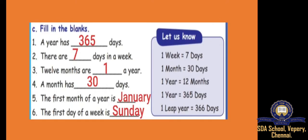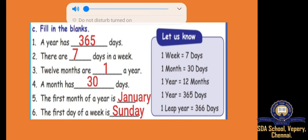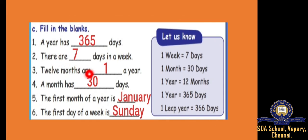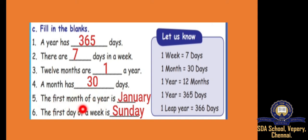A year has 365 days. There are 7 days in a week. 12 months make 1 year. A month has 30 days. The first month of a year is January. The first day of a week is Sunday.